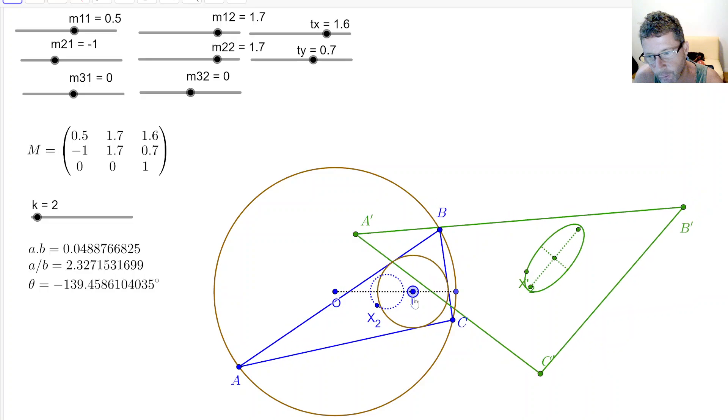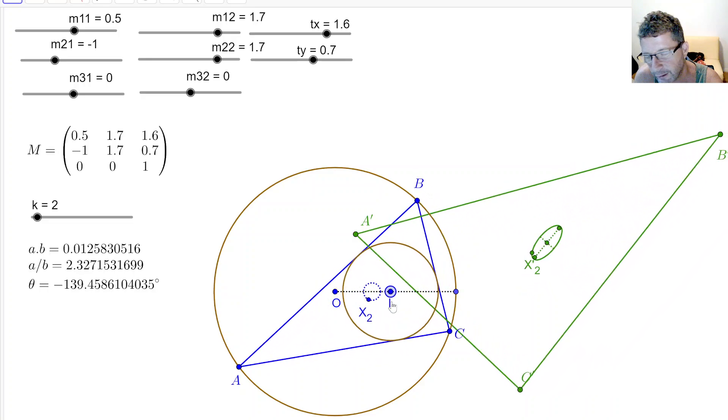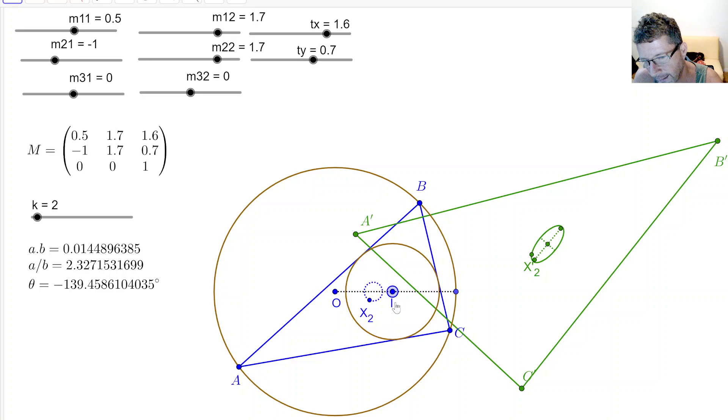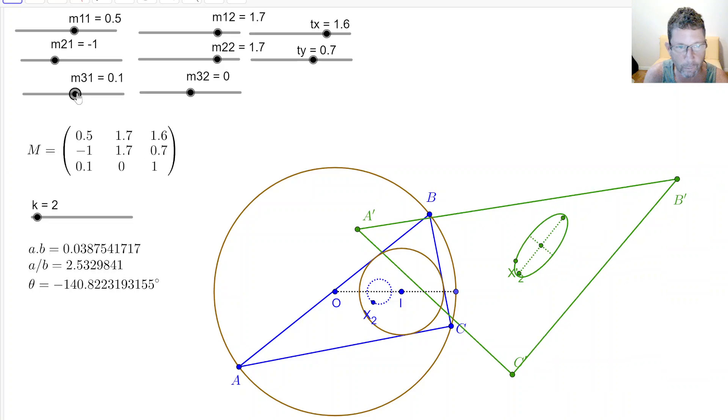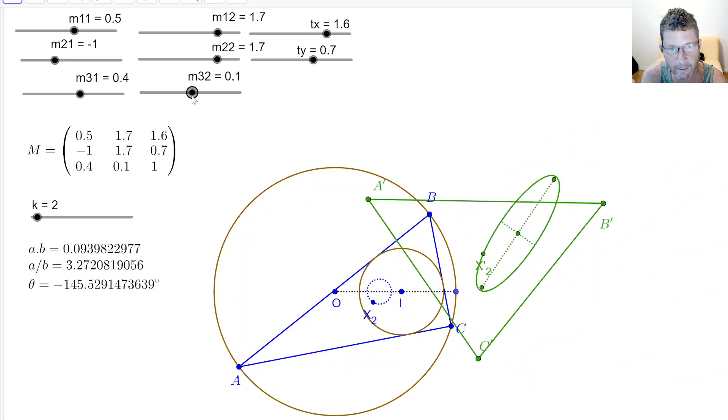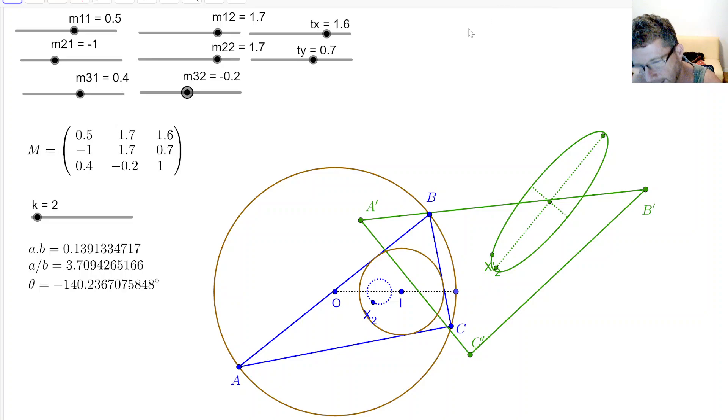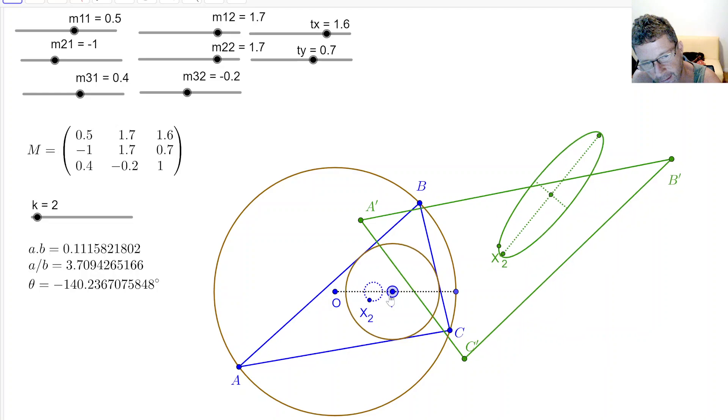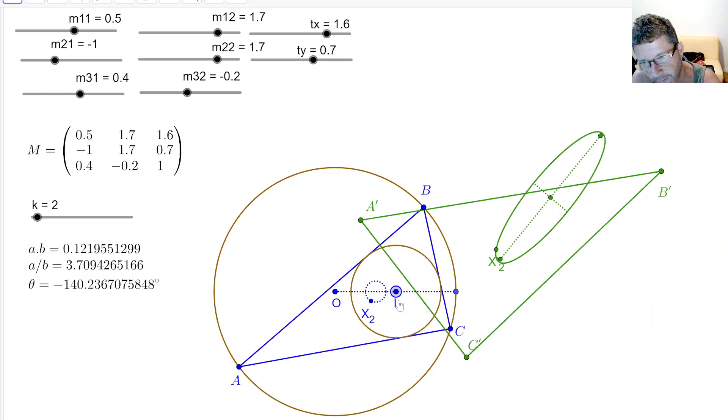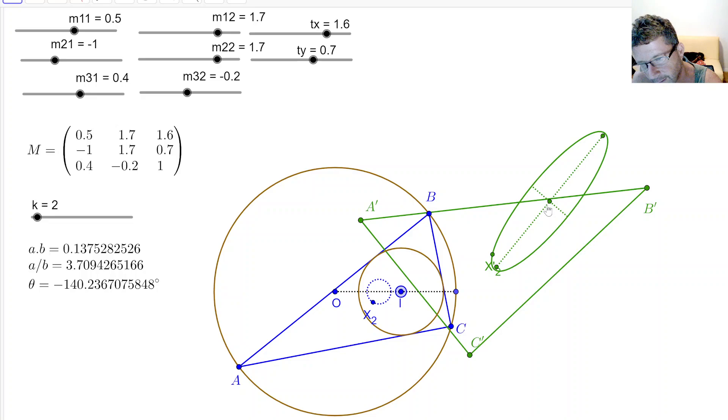I get the same conservation. So it looks like x2 is conserving orientation and eccentricity, regardless of whether the projectivity M is an affinity or a full-on projectivity. You can see here on the left that a over b and theta are being preserved. Theta is the orientation of either one of these axes.